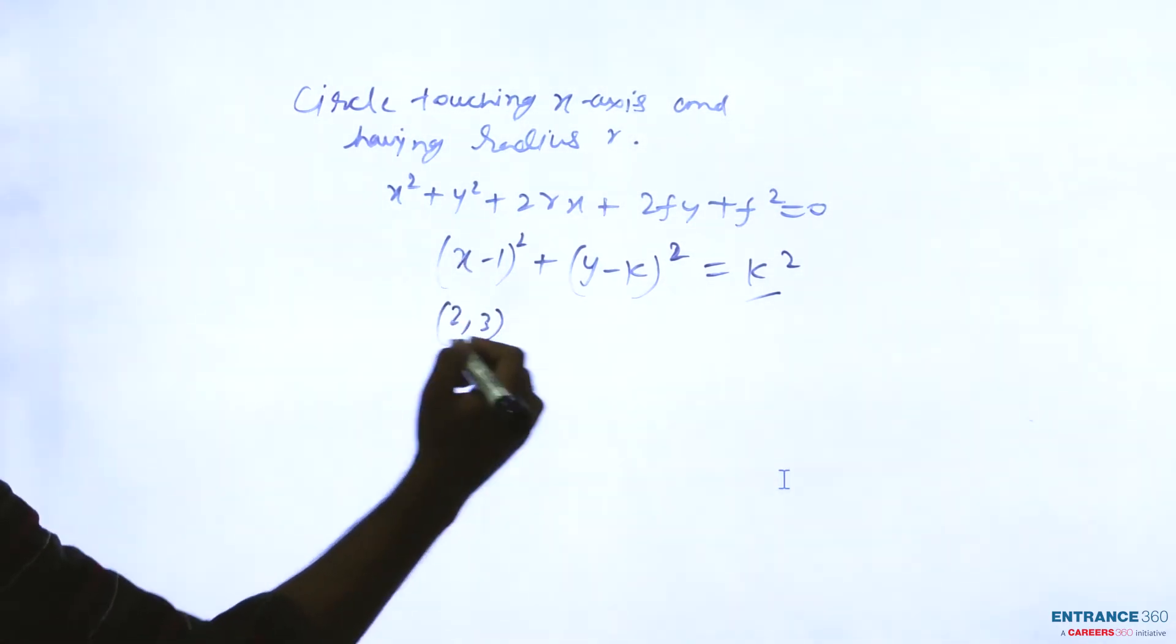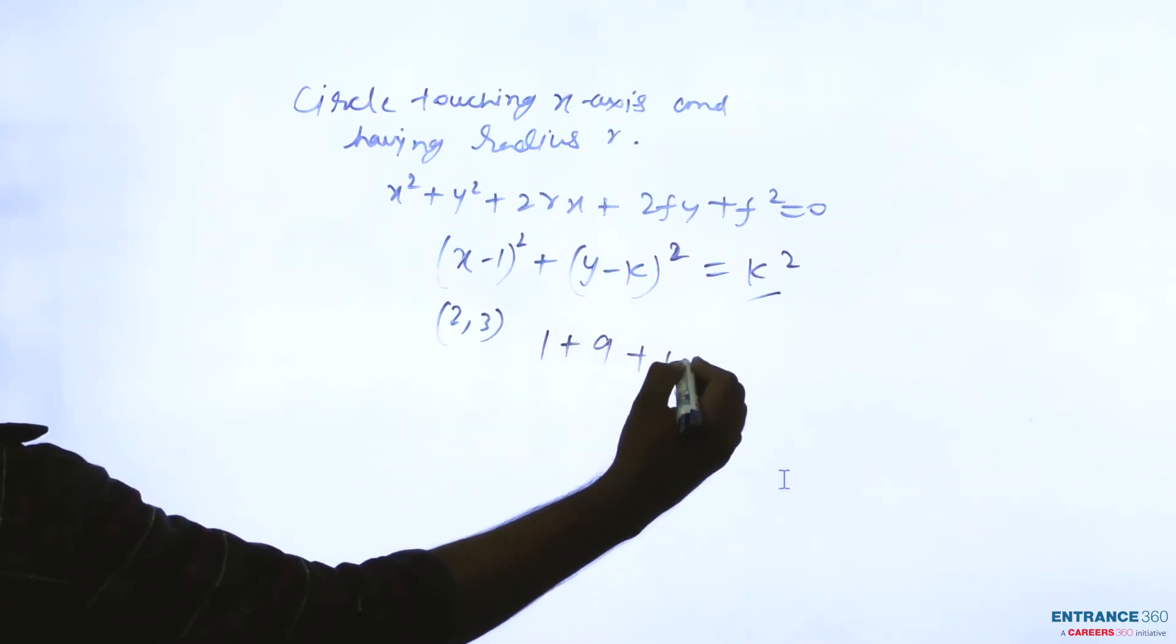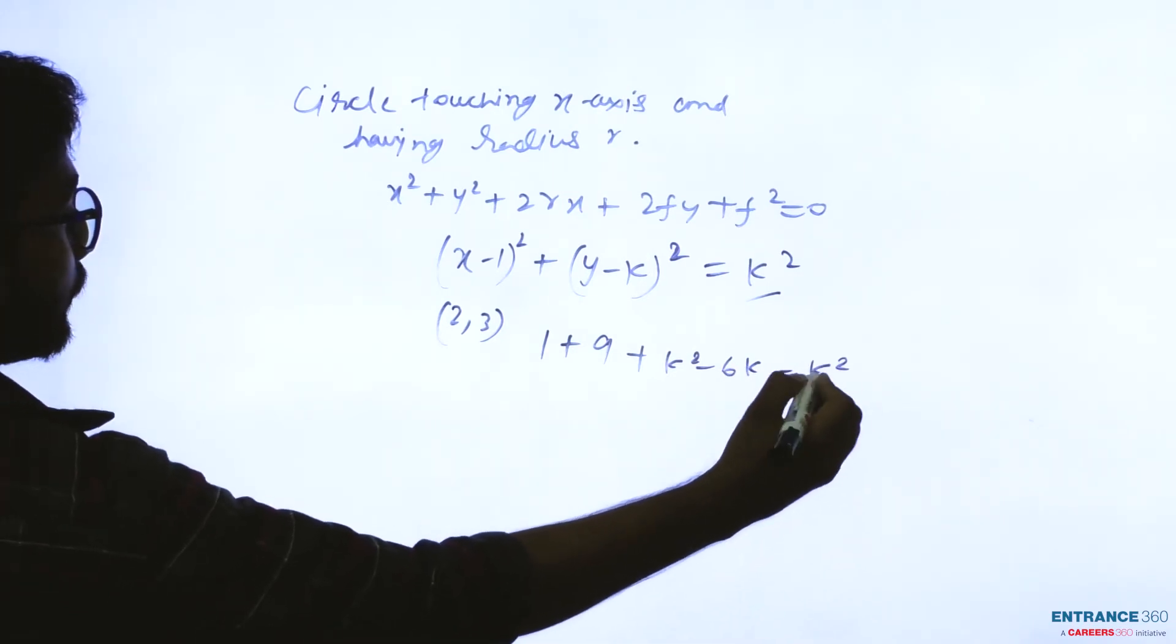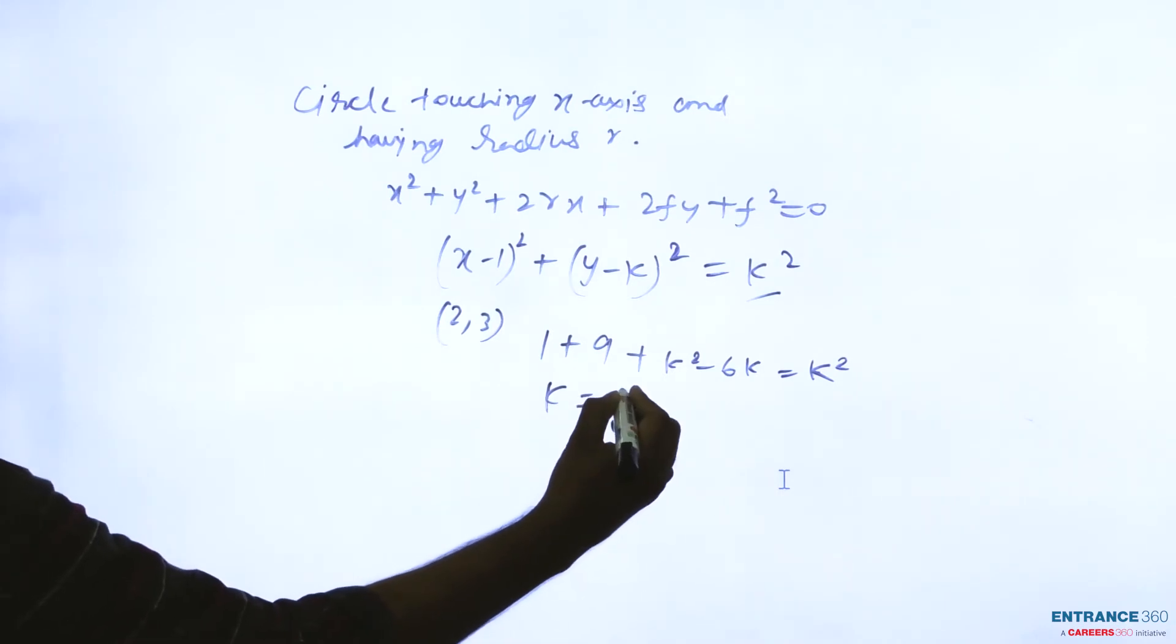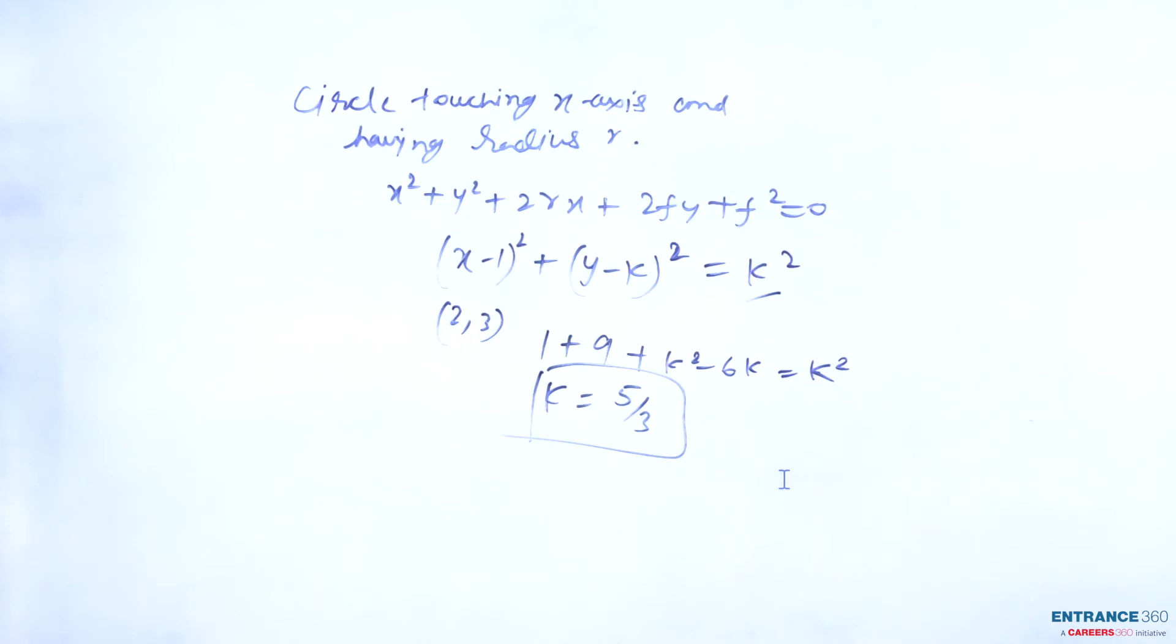After putting this value then you have the equation: 1 + 9k² - 6k = k². Then k will be equal to 5/3, and k is the radius here.